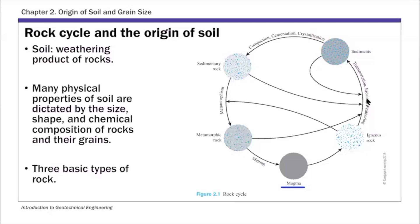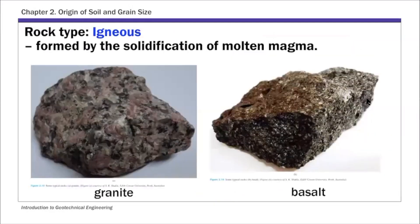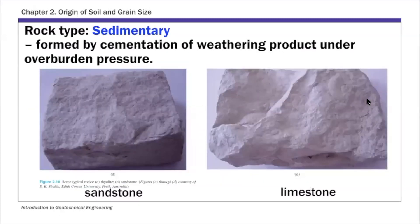The rock cycle figure on this slide highlights three basic types of rock. The first is igneous rock — igneous rocks are formed by the solidification of molten magma, with two common examples being granite and basalt. The second type is sedimentary — sedimentary rocks are formed by the cementation of weathering products under overburden pressure, with two common examples being sandstone and limestone.